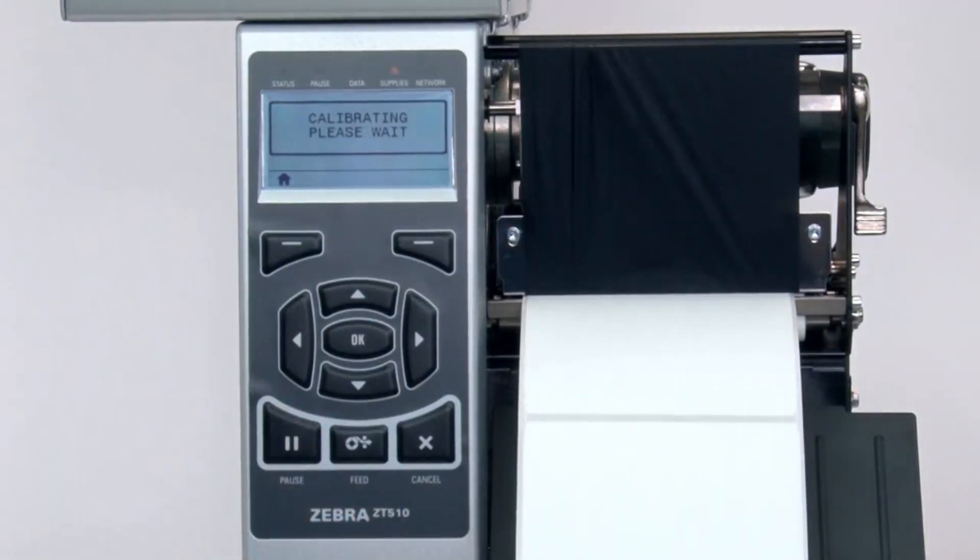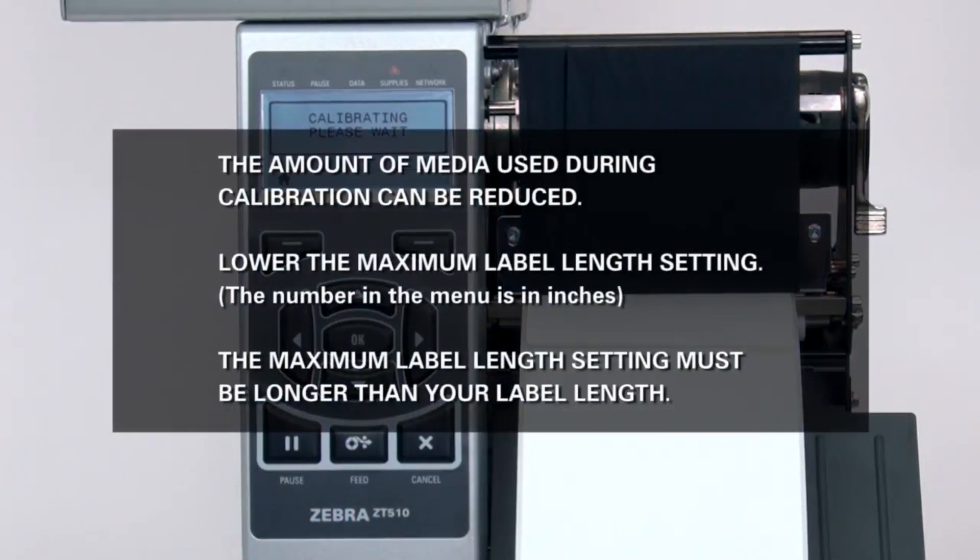The printer is now calibrating. Media will begin exiting the printer. When calibration is complete, the label should stop in the correct location.